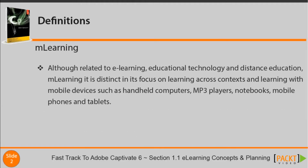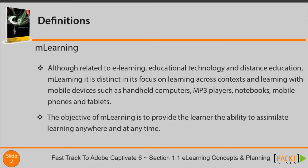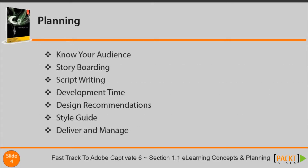Although related to e-learning and educational technology, m-learning is distinct in its focus on learning across contexts and learning with mobile devices such as handheld computers, MP3 players, notebooks, mobile phones, and tablets. The objective of m-learning is to provide the learner the ability to assimilate learning anywhere at any time. Knowing whether you are publishing your Captivate project for mobile devices or computers will make a difference in how you plan your courses. You wouldn't build a house without an architectural plan — developing an online course has the same concept.